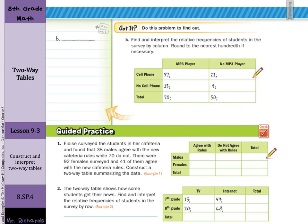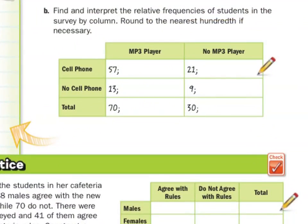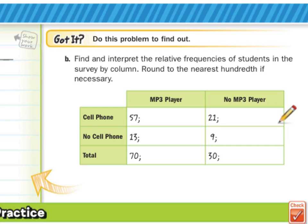Do we got it? Find and interpret the relative frequencies of students in the survey by column. Round to the nearest hundredth if necessary. Let's actually zoom in here so we can have a little bit more space to write on our screen. This is going to end up being then by column here 57 over 70, 13 over 70, and of course 70 over 70 is just going to be 1. By column, this is 21 over 30 and 9 over 30.